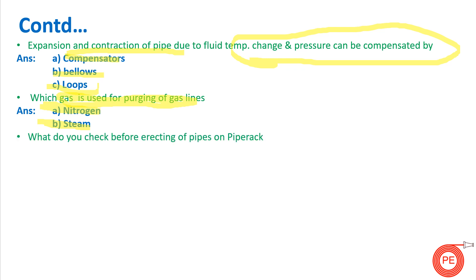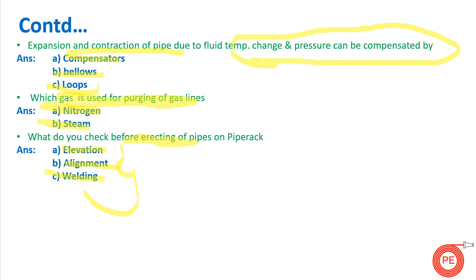What do you check before erecting pipes on a pipe rack? This is a question a fitter, foreman, piping erector, or construction engineer may be asked. The things you check are: first, elevation; after that, alignment; and next, welding. If all three are checked and marked okay, your pipe is ready for erection.